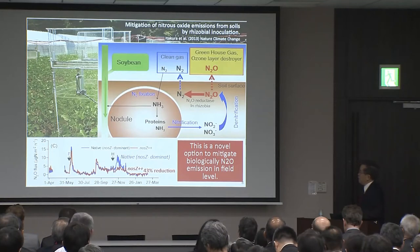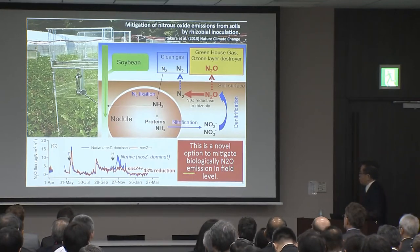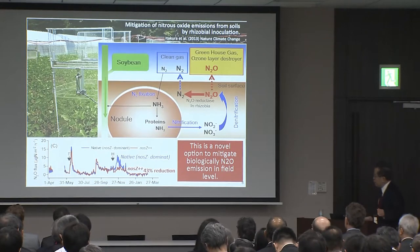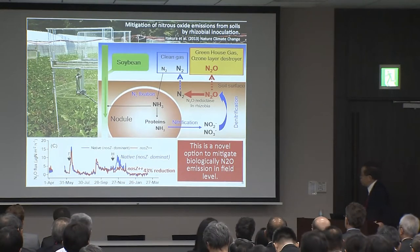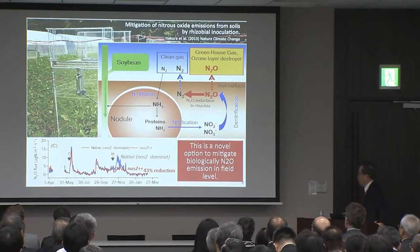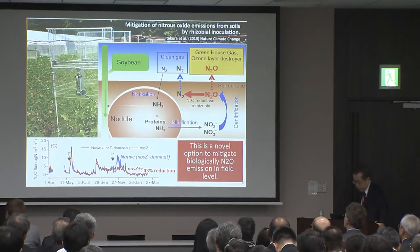The inoculation of these bacteria reduces N2O emission at the field level. This is a novel option to mitigate biological N2O emission in the field.